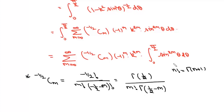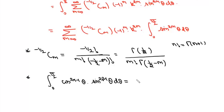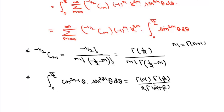We will solve the integral part using the beta function. The beta function integral form gives: the integral from 0 to pi/2 of cos^(2 alpha minus 1)(theta) times sin^(2 beta minus 1)(theta) d-theta equals Gamma(alpha) times Gamma(beta) over 2 times Gamma(alpha plus beta). So the integral from 0 to pi/2 equals Gamma(alpha) times Gamma(beta) over 2 Gamma(alpha plus beta).